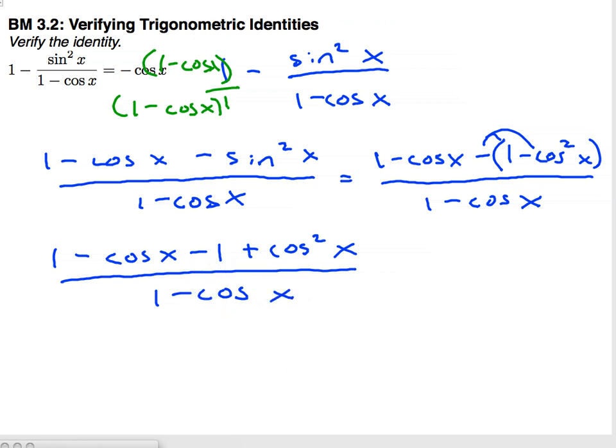Now our 1's will cancel out, and I have negative cosine x plus cosine squared x.